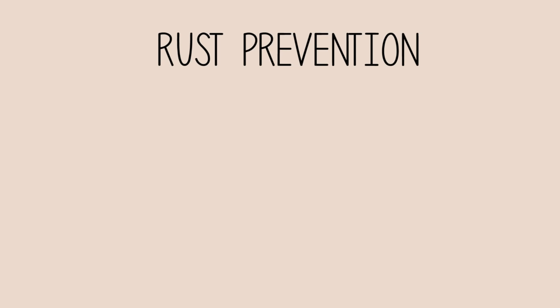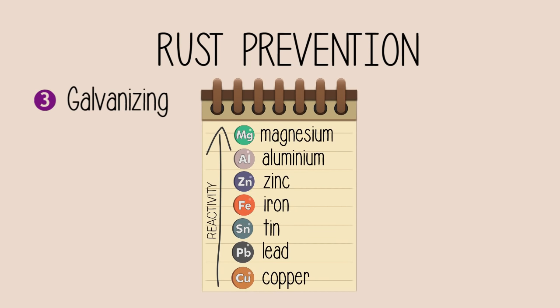Another way to prevent rusting is a sacrificial protection method called galvanizing. Have a look at this reactivity table. Zinc is more reactive than iron. When exposed to oxygen and moisture, zinc will corrode faster than iron.